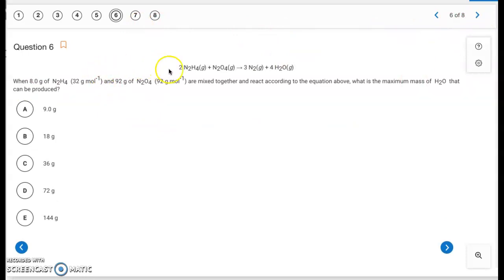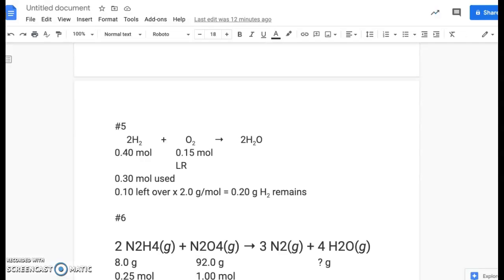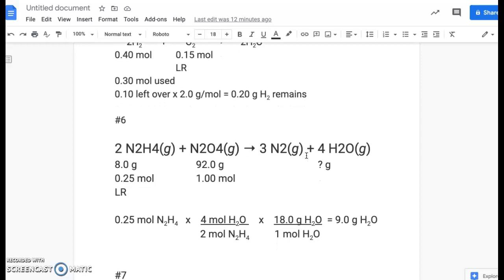Okay, number six. Another limiting reactant problem. We have 8 grams of N2H4, 92 grams of N2O4. They're mixed together and react according to the equation above. What is the maximum amount of H2O that can be produced? So it's a limiting reactant problem because we're given amounts of each reactant. Okay, so then go to my work page again. Here's our balanced equation. These are the amounts that are given.